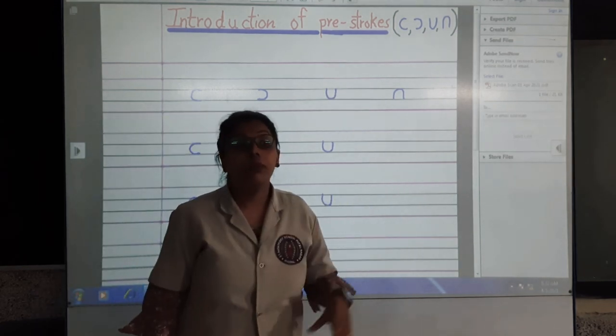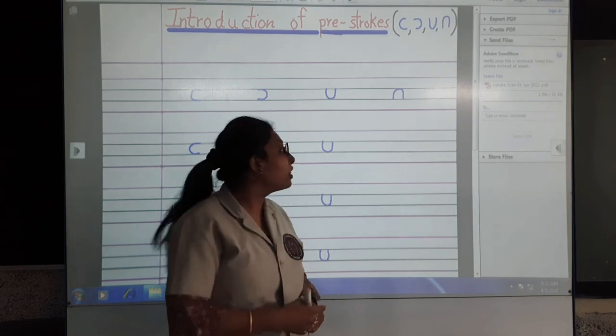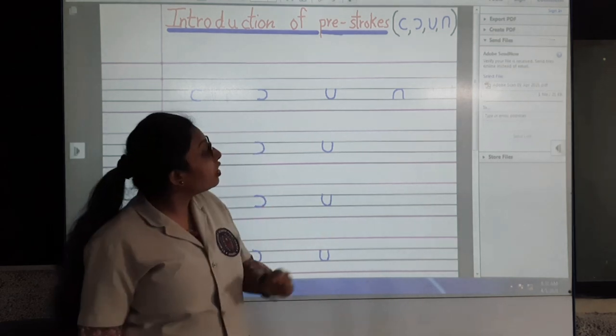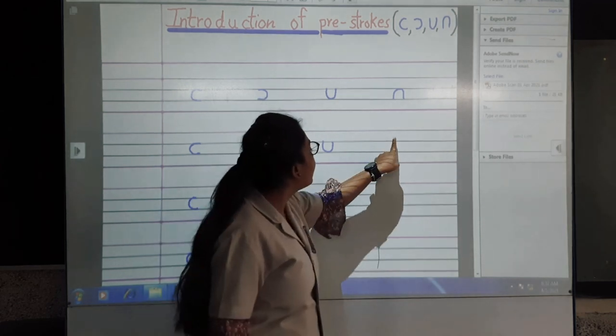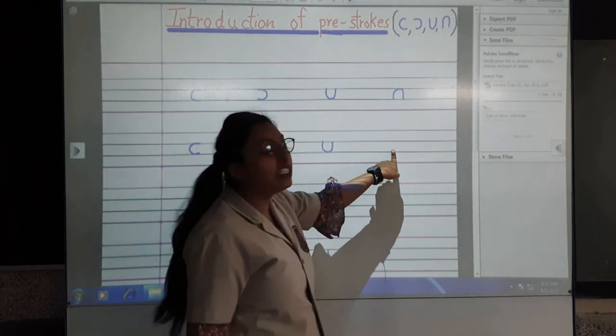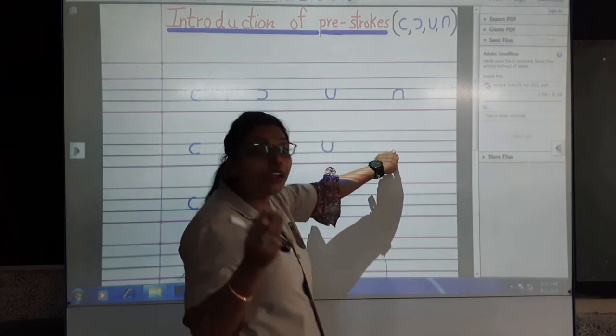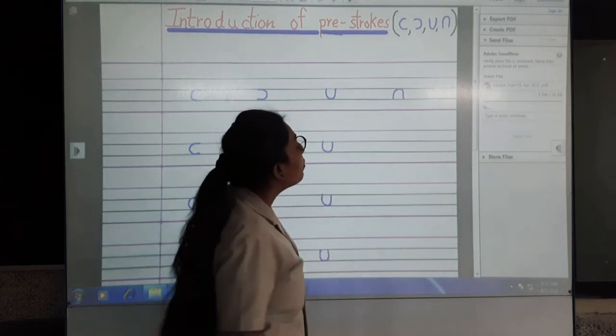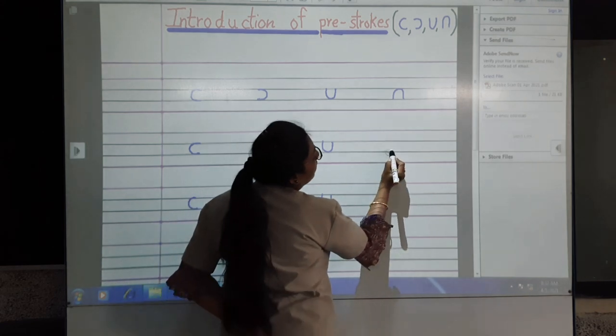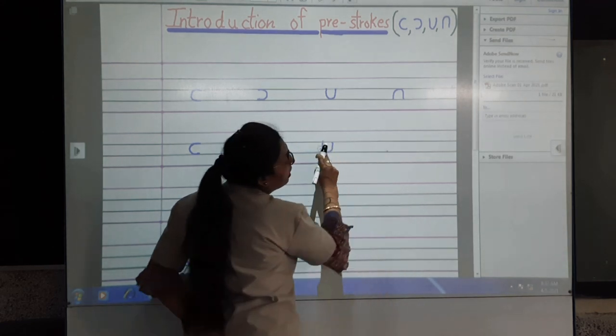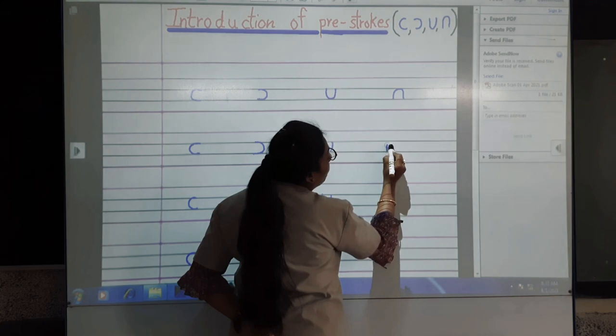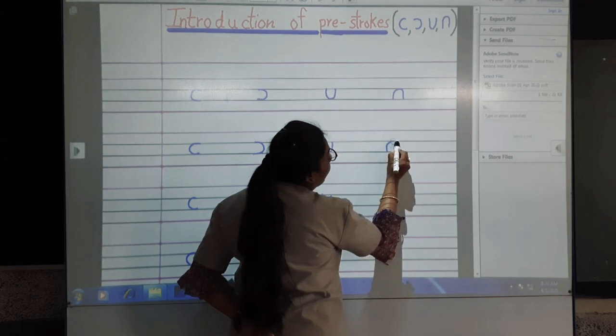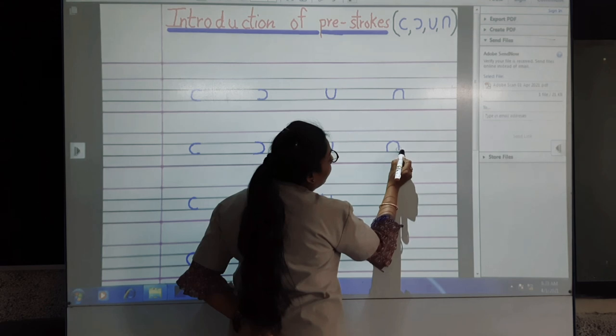Now inverse U curve, opposite U curve. Third line, first, second, third, third line, line number three. Third line start, go up, reverse U up, third line touch second line, come down and again.